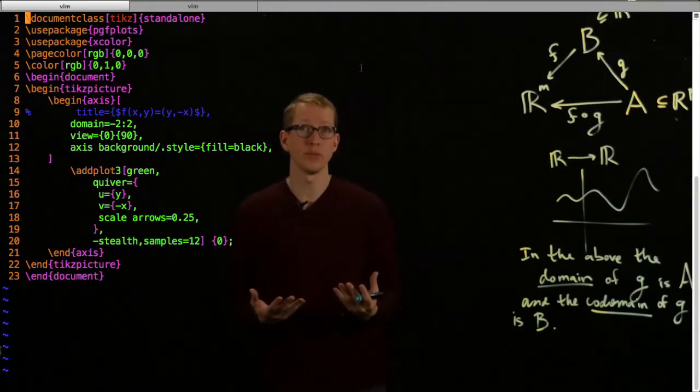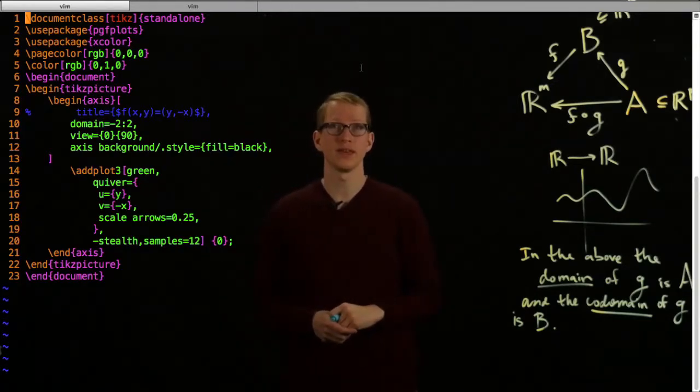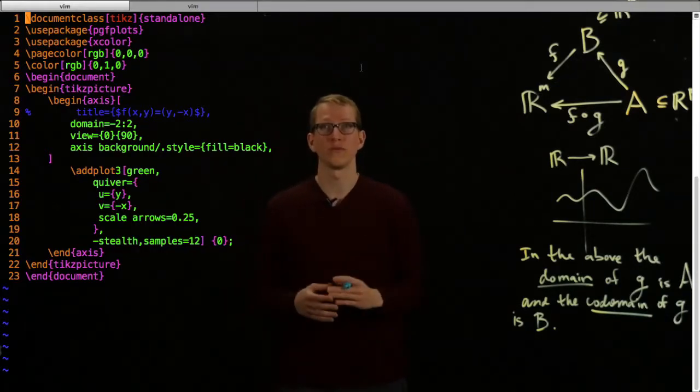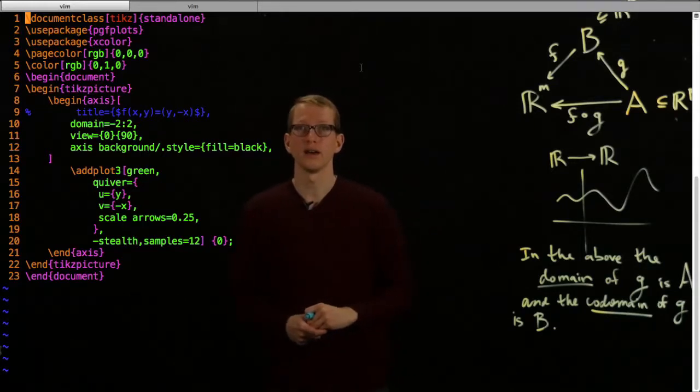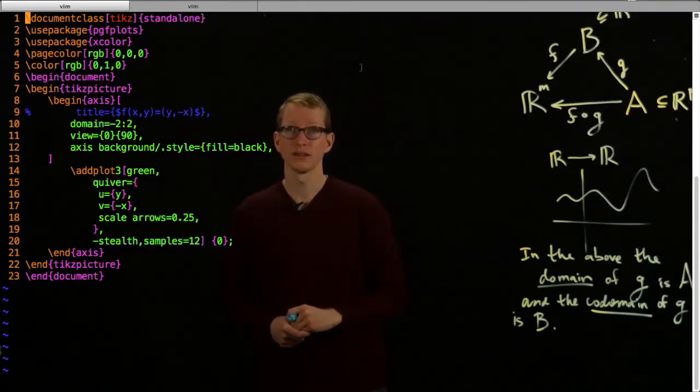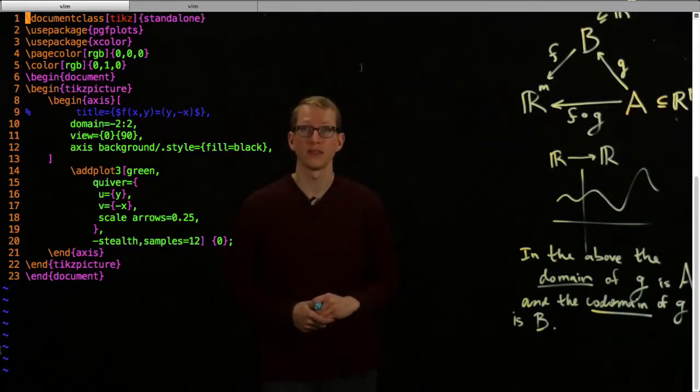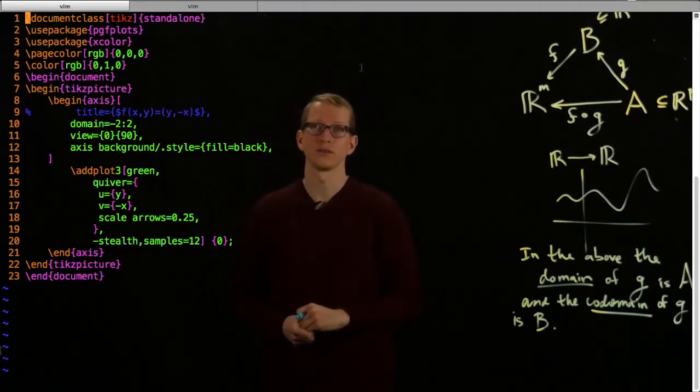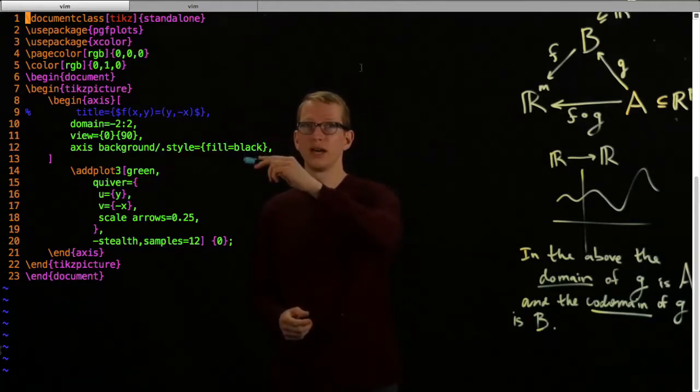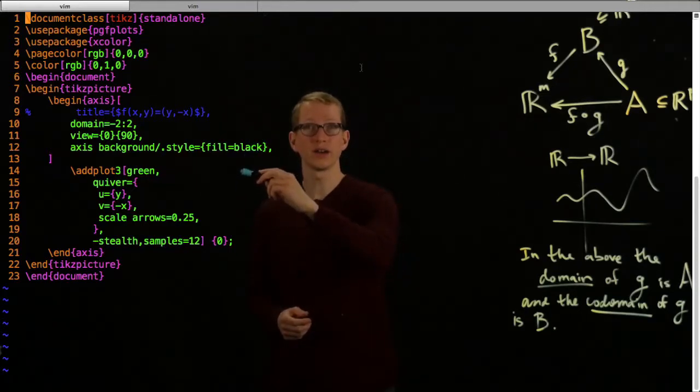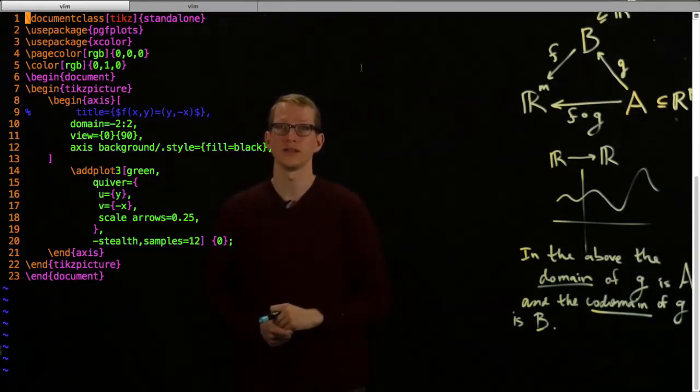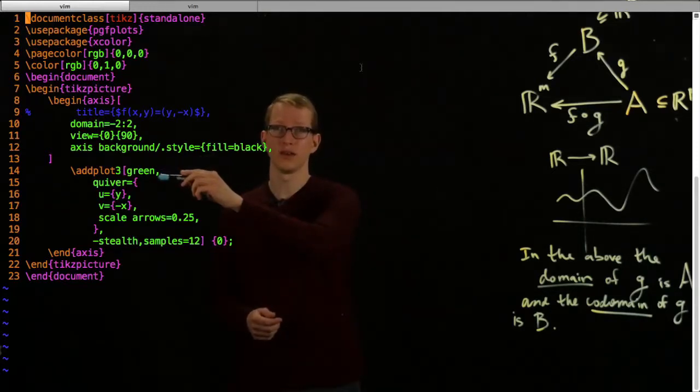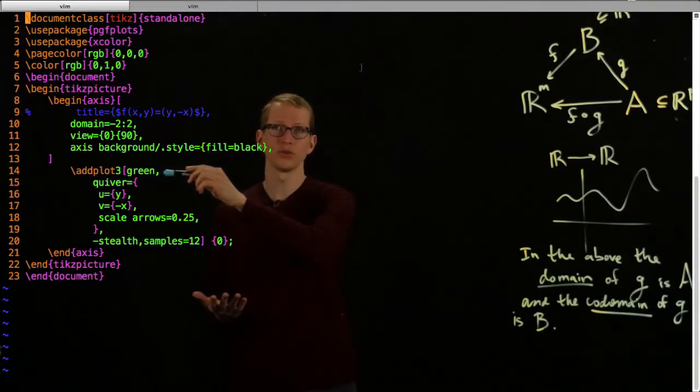We begin the axis. We set the domain. We're just going to be working with a two-dimensional plot, so we will set the domain to go from minus 2 to 2. That's the x-axis. We'll also set the background so that it's black, so that it's not an eyesore. And here's where our plot is going to be. This is where we define our function. What we're going to do is we are going to make the actual arrows that we'll draw, they're going to be green.